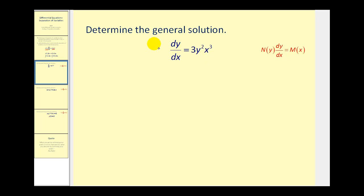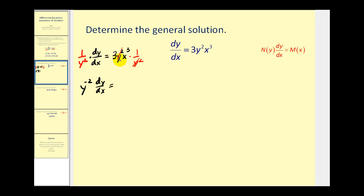We want to have the y part on the left side with dy/dx, so we'll multiply both sides of this equation by one over y squared. On the right side the y squared simplifies out, and on the left side I'm going to rewrite this as y to the power of negative two times dy/dx equals three x squared. This fits the form we're looking for, so let's rewrite it in differential form: y to the power of negative two dy must equal three x squared dx.